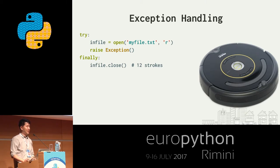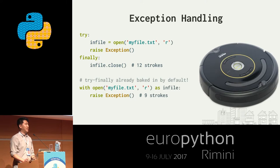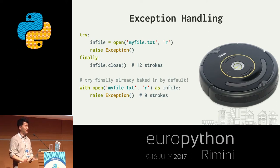Where context managers really shine is when dealing with exceptions. In this contrived example, opening a file and raising an exception means you'd have to wrap everything in a try/finally block to ensure the file gets closed. With the context manager, it just happens automatically — it catches the exception, runs the closing portion of the code, and re-raises the exception so something upstream can handle it. This is much more natural because it matches the business logic you're trying to express.